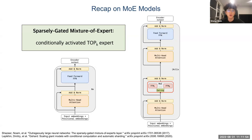During the forward pass and backward pass, we will only activate the top-K experts. Taking top-1 as an example, you can activate just one FFN in the real computation, which is equivalent or comparable to a normal transformer block.